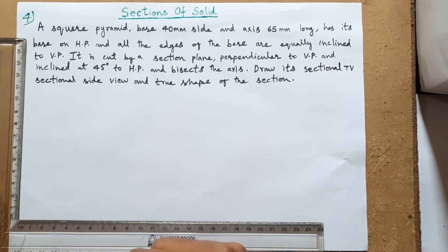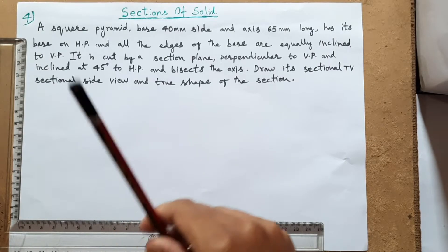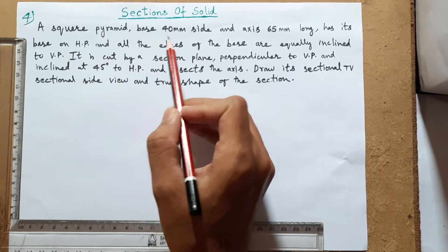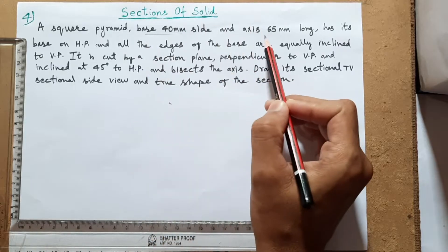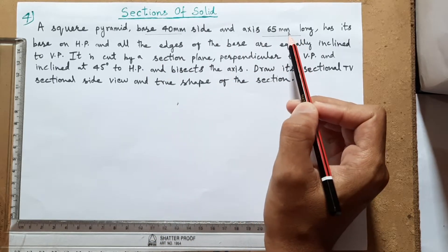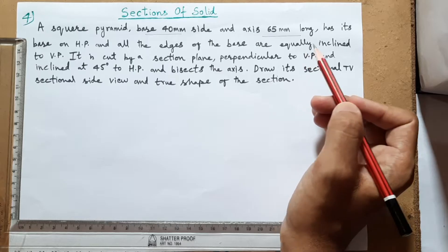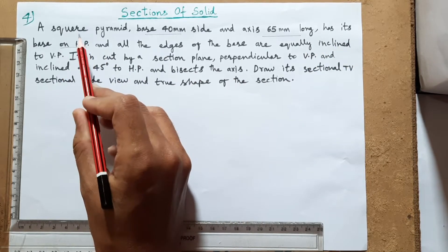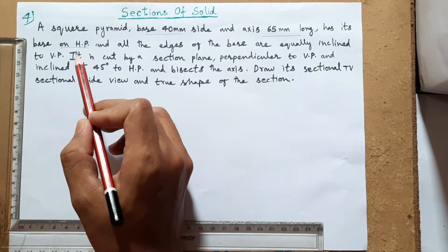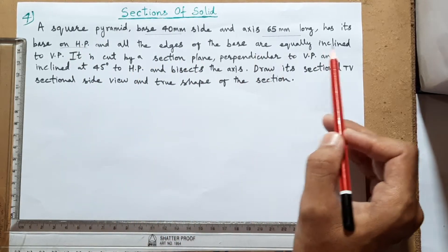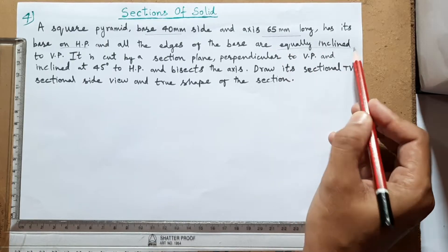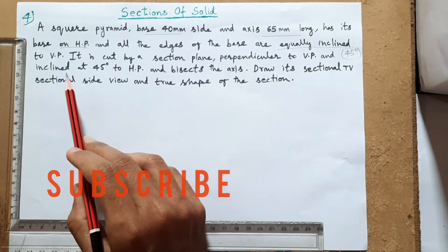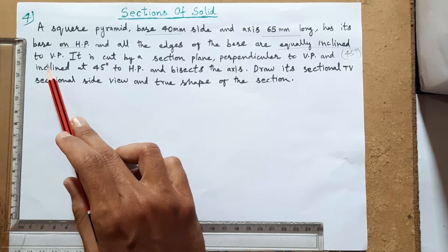Hello friends, welcome back to my YouTube channel. In this class we will be seeing sections of solid problem number four. A square pyramid with base 40 mm and axis 65 mm has its base on HP - that means horizontal plane. All the edges of the base are equally inclined, which means we take them at 45 degrees.